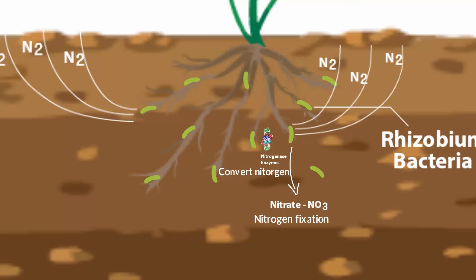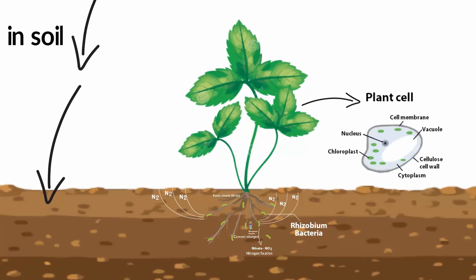Just remember, nitrogen fixation takes unreactive nitrogen from the air and turns into a usable form. After nitrogen fixation, roots of plants absorb the nitrate. In the plant, they are in the form of protein and nucleic acids.